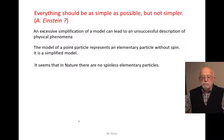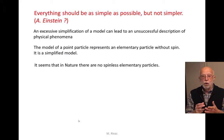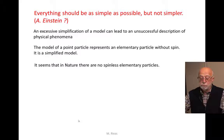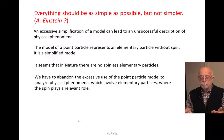But in nature, it seems that there are no spinless elementary particles. 20th century physics has shown that all known elementary particles of nature — electrons, muons, quarks, photons — all of them have a spin. So if all elementary particles have a spin, it is unnecessary to describe elementary particles in terms of point particles. We have to abandon the excessive use of the point particle model to analyze physical phenomena, which always involves spinning particles, and the spin is going to play a relevant role.